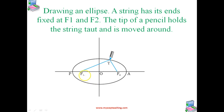Select two points F1 and F2. Take a length of string and fix its ends at F1 and F2 by pins. With the tip of a pencil, stretch the string taut and draw a curve by moving the pencil, keeping the string taut throughout. This way you can draw an ellipse. For any point T on the ellipse, the sum of the distances from F1 and F2 is a constant. The points F1 and F2 are called foci.